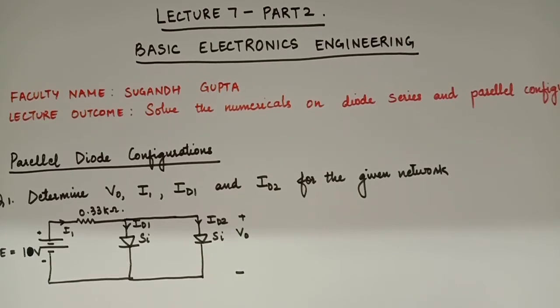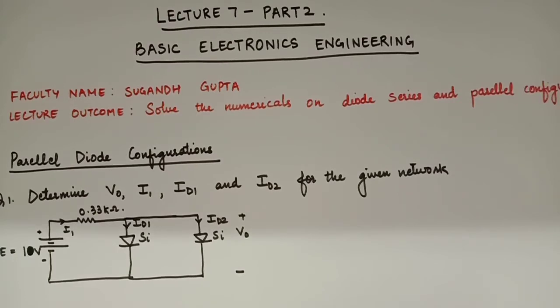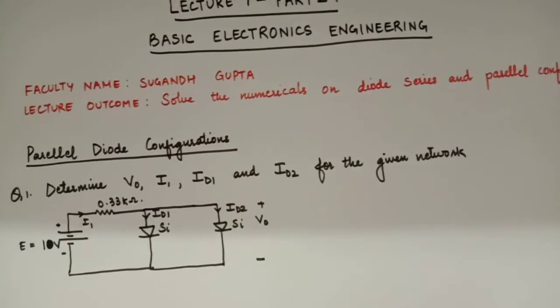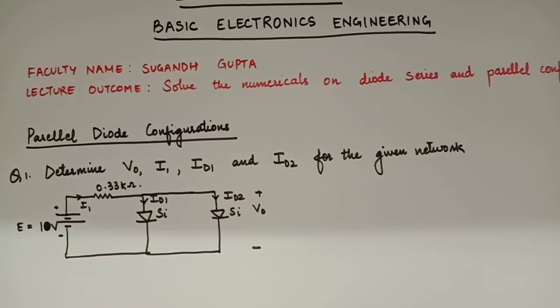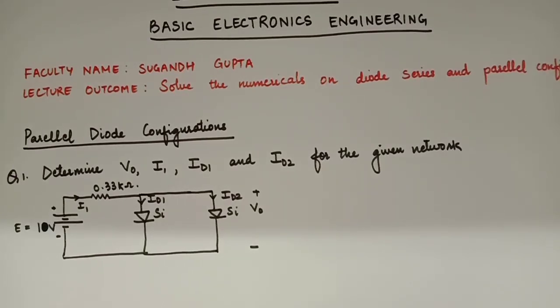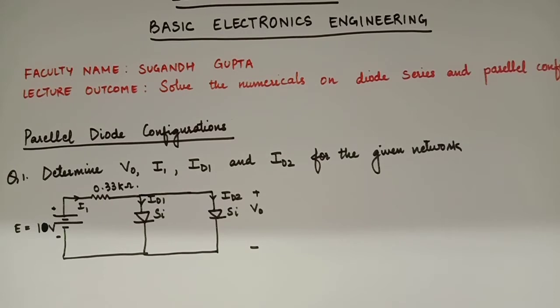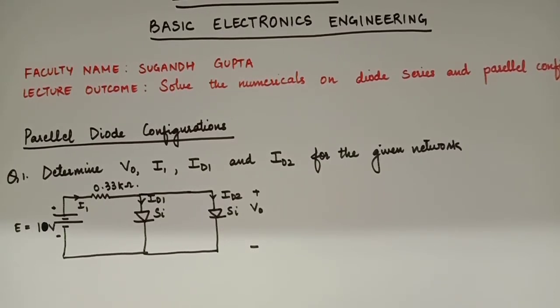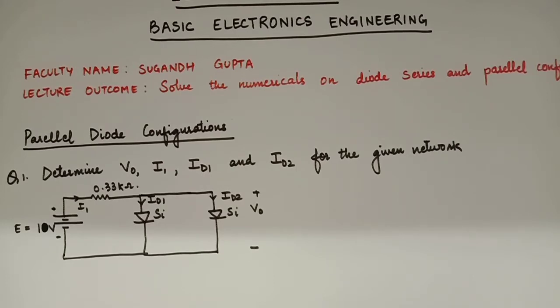As we are saying the names diode series and parallel will come across certain networks where the diodes will be connected in series or in parallel. But we do not have to waste our time in thinking about whether the diode given configuration network is diode series or diode parallel. We just have to follow a strategy and we have to start solving the numericals. First of all, we first of all recognize or determine the state of diode that whether it is reverse biased or forward biased. Accordingly, we replace it with its equivalent circuit, whether with an open circuit or whether with a battery of 0.7 volt. And then we start solving the numerical by applying Kirchhoff's voltage law mostly. And sometimes we can also use Kirchhoff's current law.